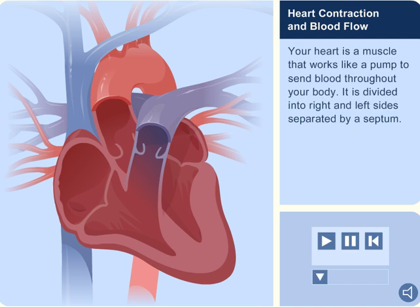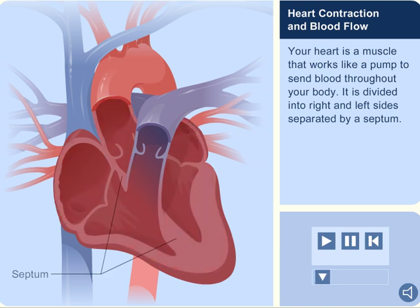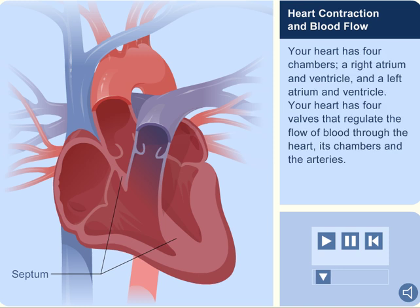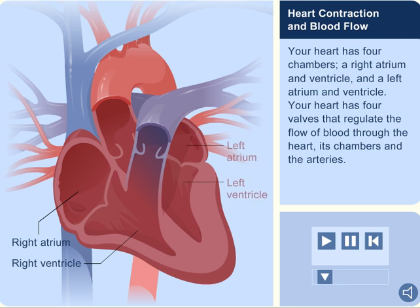Your heart is a muscle that works like a pump to send blood throughout your body. It is divided into right and left sides separated by a septum. Your heart has four chambers: a right atrium and ventricle, and a left atrium and ventricle. Your heart has four valves that regulate the flow of blood through the heart, its chambers, and the arteries.